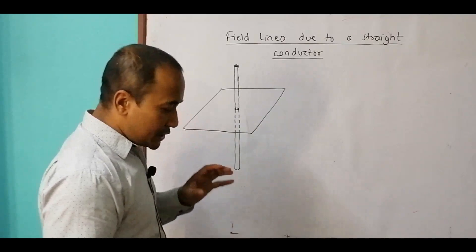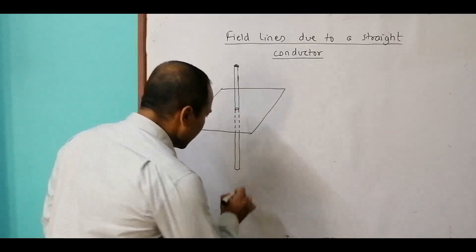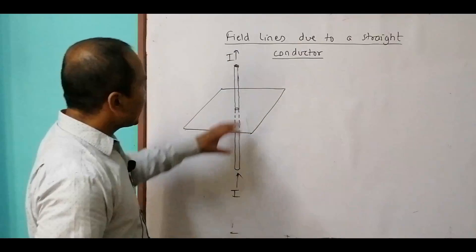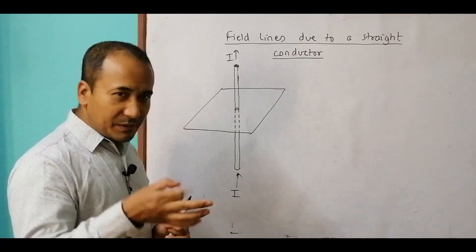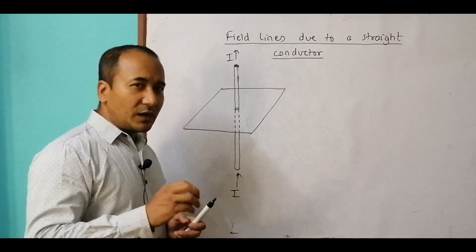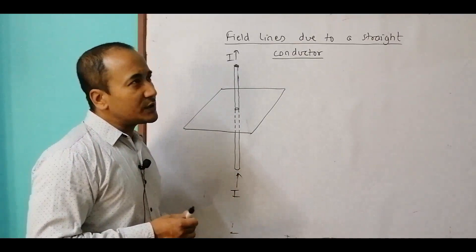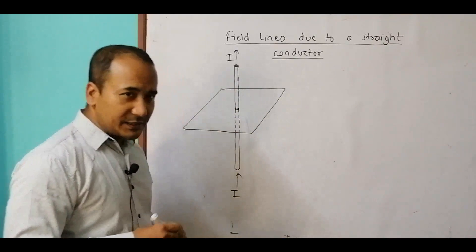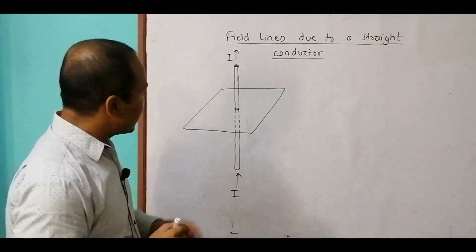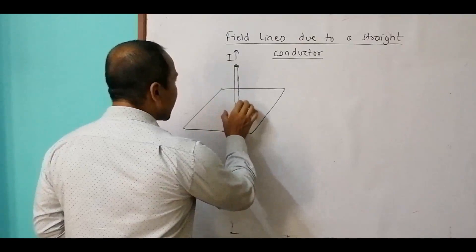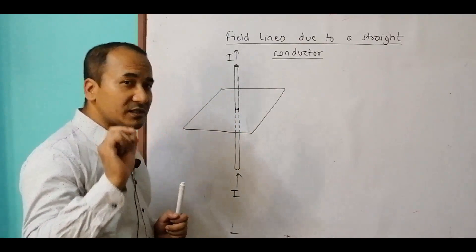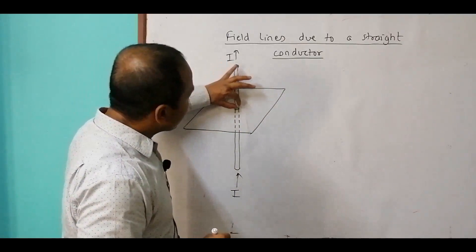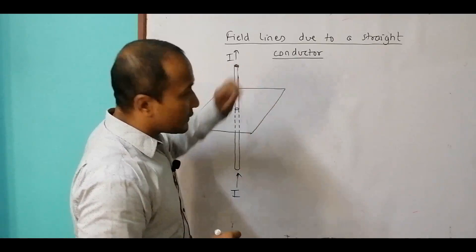Now if I allow current in an upward direction and sprinkle fine iron dust particles here and tap it, they will arrange into a pattern. If I also use a compass needle and place it at several positions, it will also show a pattern. The pattern will be circles — concentric circles around this wire — and the spacing between the circles increases as we go farther away from the conductor.